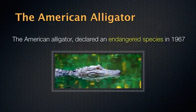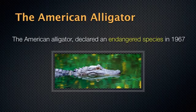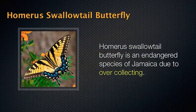Another example: the American alligator, which was declared to be an endangered species in 1967. Another example is the Homerus swallowtail butterfly in Jamaica, which is considered to be endangered. The reason is that people visited Jamaica, collected and preserved the butterflies because of their beauty, and now it's an endangered species.